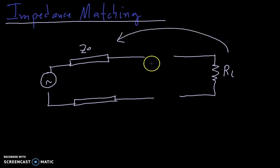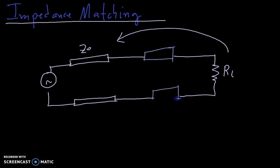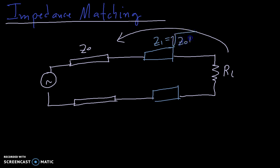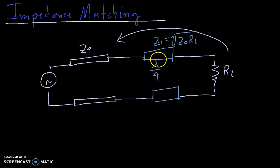So if you watched the last video, the method that we use is the quarter wavelength transformer method, whereby we use a transmission line of impedance Z1, which is equal to the square root of Z0 times RL, and the length of this transmission line has to be equal to the wavelength divided by 4. That's why it's called the quarter wavelength method, and this wavelength is the wavelength of your signal.